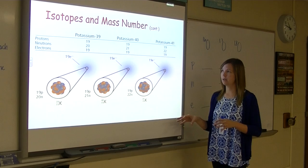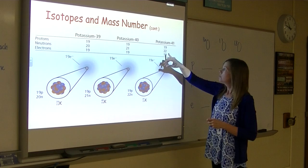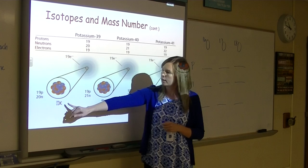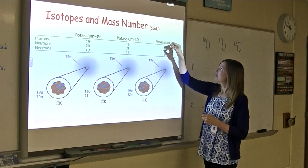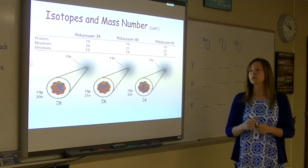So the number of protons and the number of electrons are always going to be the same. Now the number of neutrons though, look, it goes from 20 to 21 to 22. This number here is the atomic mass. You're going to notice down here that they write it as a superscript like up at the top. That's the atomic mass. So you're going to subtract 39 minus 19 to get 20, 40 minus 19 to get 21, 41 minus 19 to get 22. So we're going to try an example.